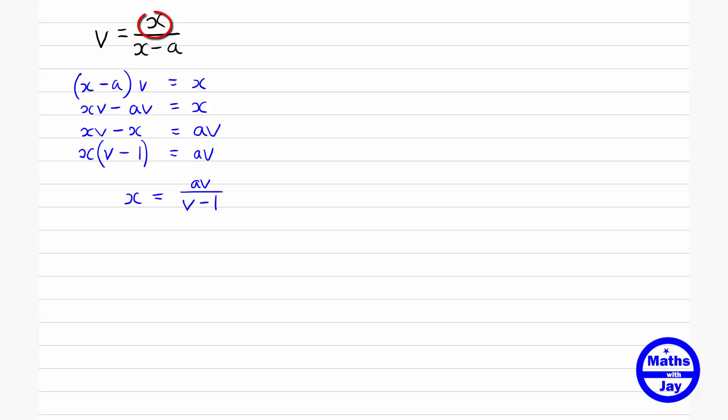x started off in two places, in both the numerator and denominator. We multiplied both sides of the formula by the (x-a) so that the (x-a) appeared as like a coefficient of the v on the left-hand side, and then we rearranged everything until we got all the terms in x on one side, everything else on the other, and then factorized the left-hand side so that the x only appears once, and then we can divide to get x as the subject.